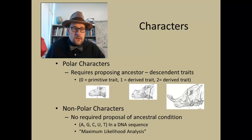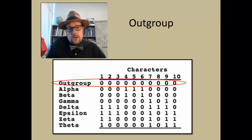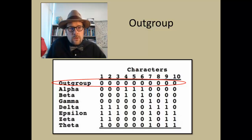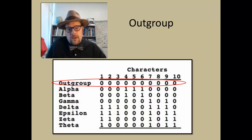Most characters we use in paleontology are polar characters, in which we propose a primitive condition. One way to do this is to include an outgroup — usually the oldest species or group most closely related to the ingroup. All other species are considered the ingroup. In paleontology the outgroup is often a fossil older than all the other groups, and ideally it's a species we know a great deal about with a good skeleton.